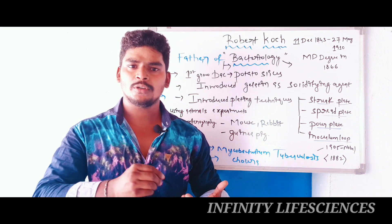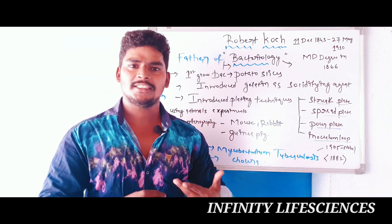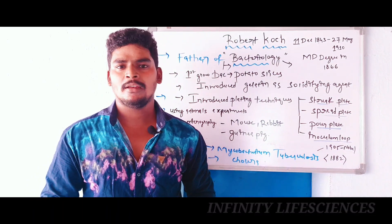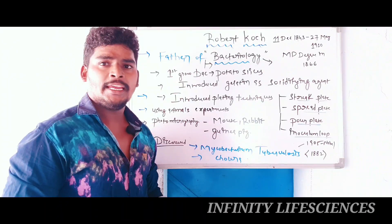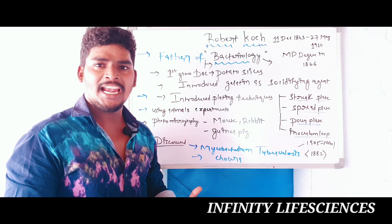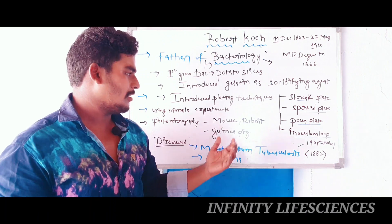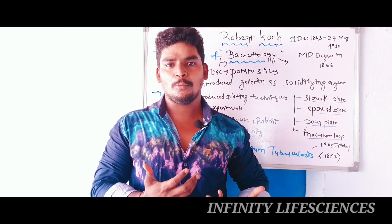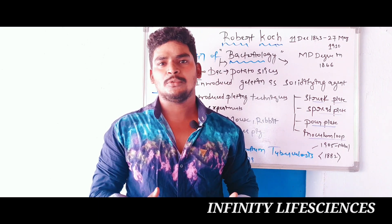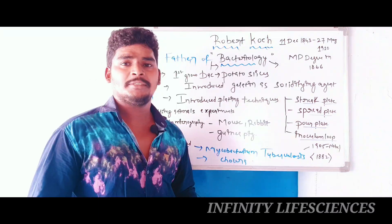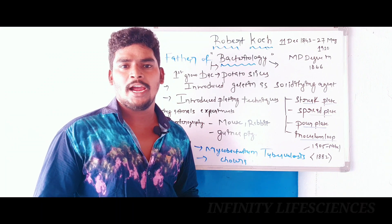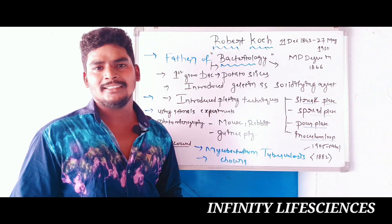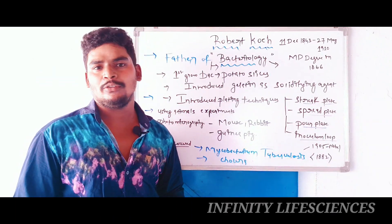Robert Koch introduced the concept of using animals as experimental models, such as mouse, rabbit, and guinea pig. His major discoveries include Vibrio cholerae and Mycobacterium tuberculosis. Tuberculosis was discovered in the year 1882, and he was later awarded the Nobel Prize in 1905.